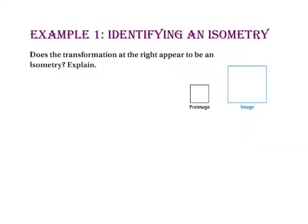In example 1, we will identify an isometry. Does the transformation at the right appear to be an isometry? Explain. Since the image is larger than the pre-image, the image is not an isometry because the image is not congruent to the pre-image.